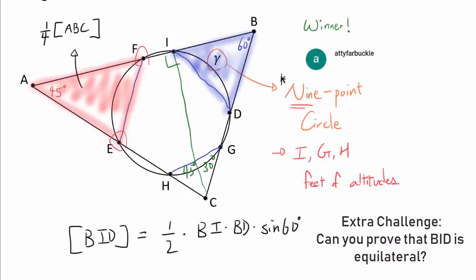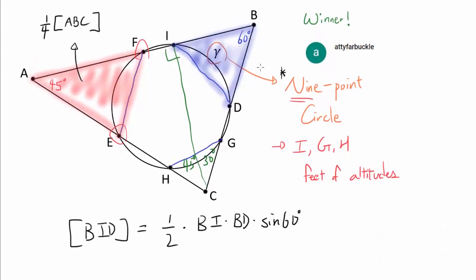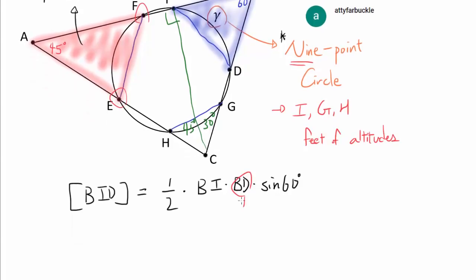This is a well-known area of triangle formula. And we know right away that BD is in fact 1/2 of BC because D is the midpoint.